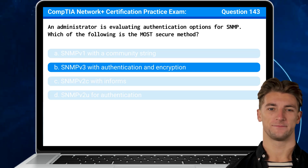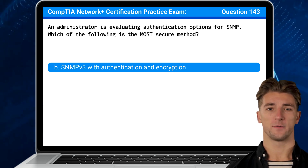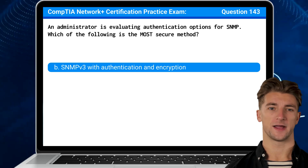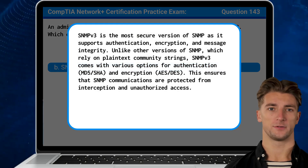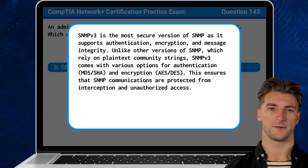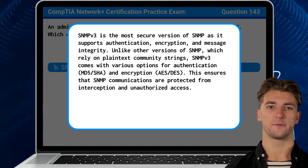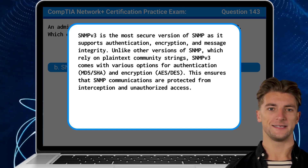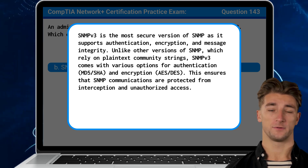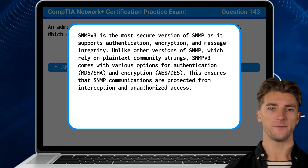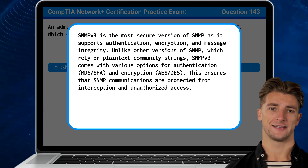The answer is B. SNMP version 3 with authentication and encryption. SNMP version 3 is the most secure version of SNMP as it supports authentication, encryption, and message integrity. Unlike other versions of SNMP which rely on plain text community strings, SNMP version 3 comes with various options for authentication and encryption, ensuring that SNMP communications are protected from interception and unauthorized access.